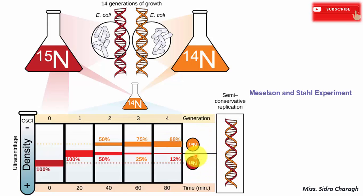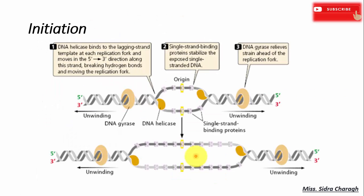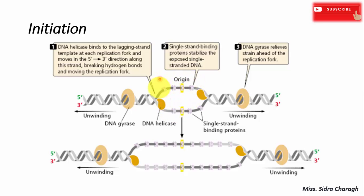DNA replication consists of three steps: initiation, elongation, and termination. In initiation, the first step is to unzip the double helix structure of the DNA molecule. This is carried out by the enzyme DNA helicase, which breaks the hydrogen bonds holding the complementary bases of DNA together. The separation of the two single strands creates a Y-shaped replication fork. Single-stranded binding proteins then bind to this single-stranded region, protecting it from breakage and preventing it from renaturing.